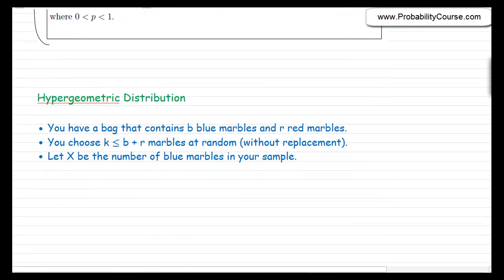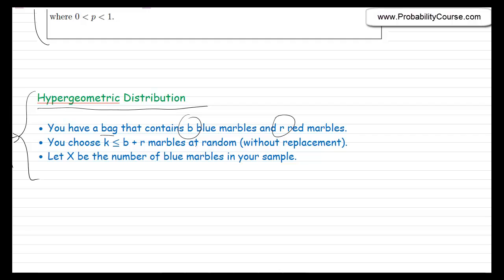Let's talk about the next distribution: the hypergeometric distribution. Here is a random experiment that produces it. You have a bag that contains b blue marbles and r red marbles. In applications, you might be sampling from a population — for example, b males and r females. For simplicity, let's talk about marbles in a bag.